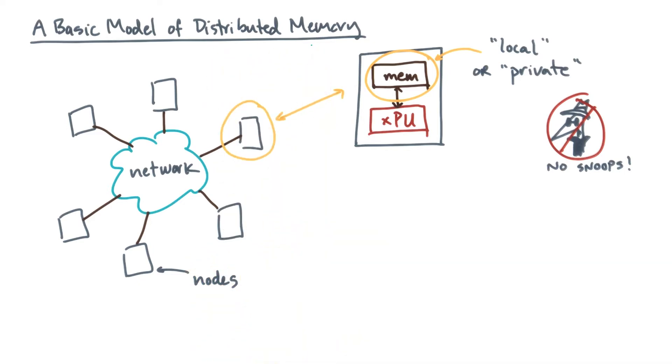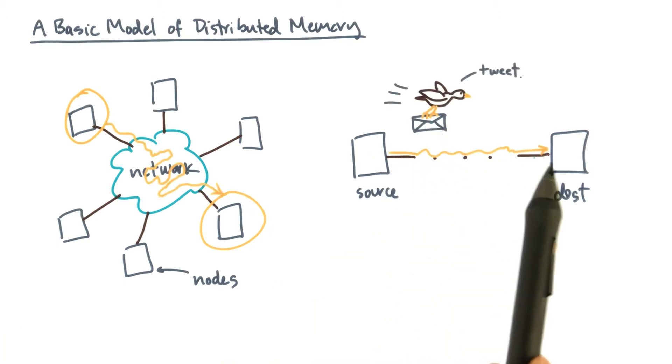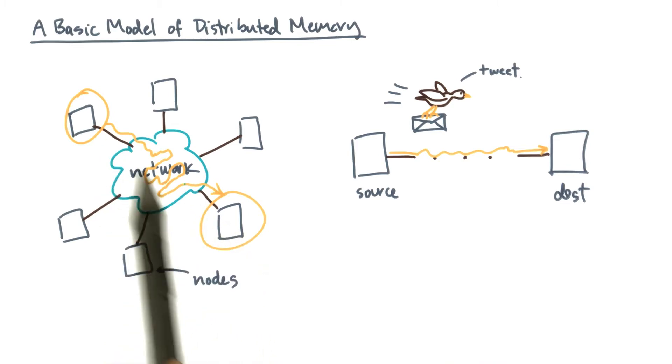Now this abstraction of private memories is critical. It implies that to share data, nodes will have to send messages to one another. So for example, suppose this node wants to send data to this node. The only way to do that is the sender or source has to package up a message and then put it on the network. So this message will have to find some path through the network to get from the source node to the destination node.